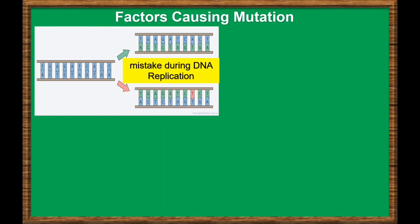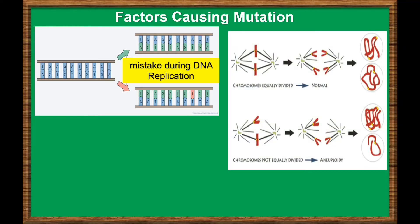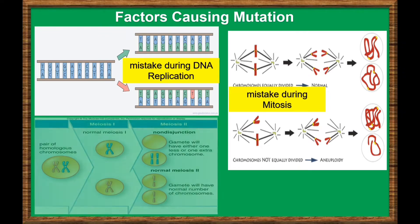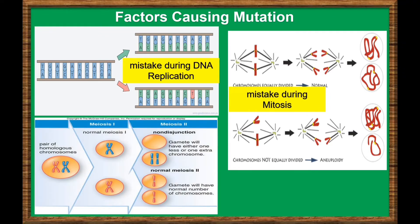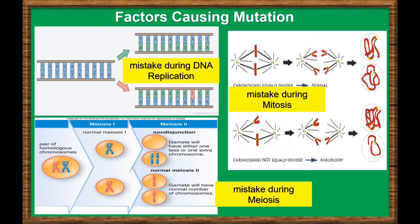Sometimes mutations can occur from the following: mistakes during DNA replication, mistakes during mitosis — mitosis is a process where a single cell divides into two identical daughter cells — or even during meiosis. Meiosis is a process where a single cell divides twice to produce four cells containing half the original amount of genetic information. These cells are our sex cells: sperm in males and eggs in females.